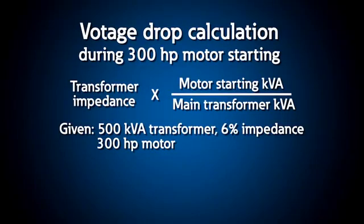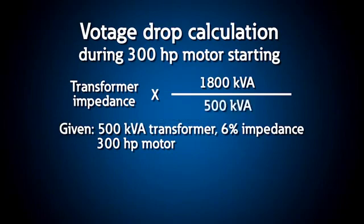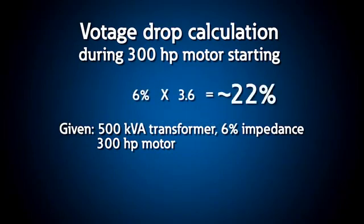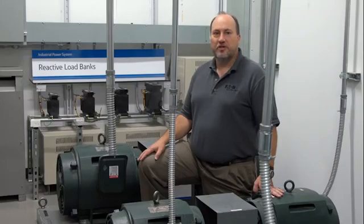This 7.2% change in voltage may cause lights to dim or flicker, but since most loads can endure a 10% voltage change, no formal study is required. For larger motors — say a 300 horsepower motor on the same transformer — the same approach would indicate a voltage drop of almost 22%. This is significant enough to justify a more precise analysis to determine if reduced voltage starting should be considered.